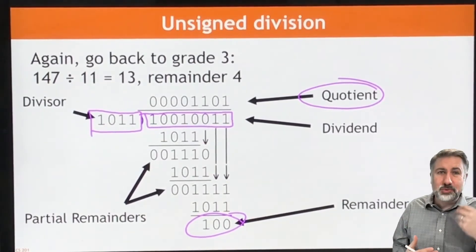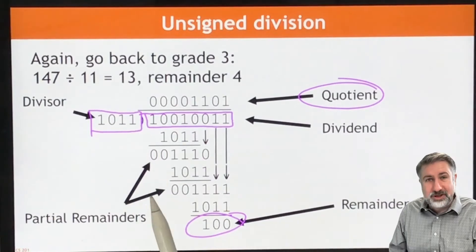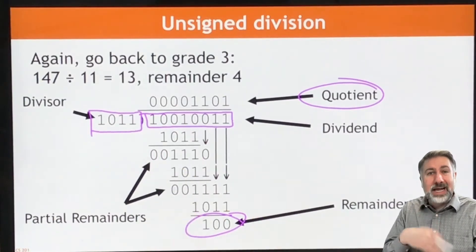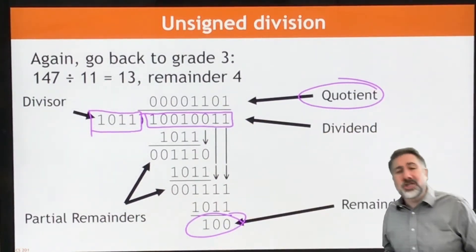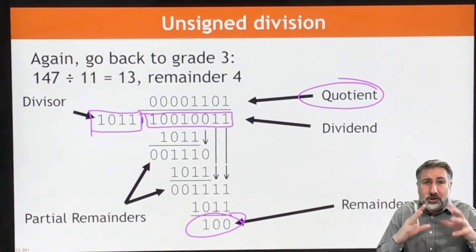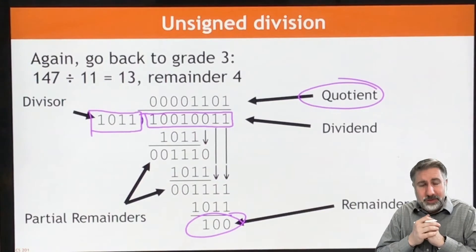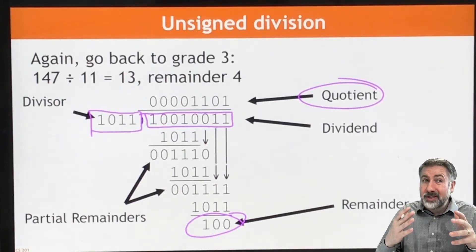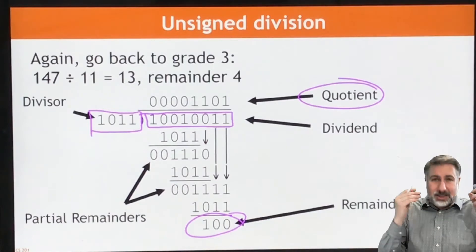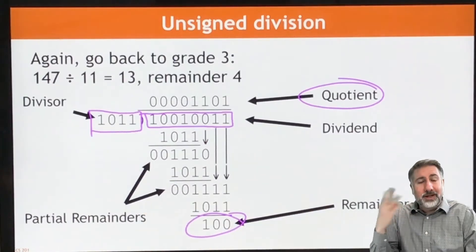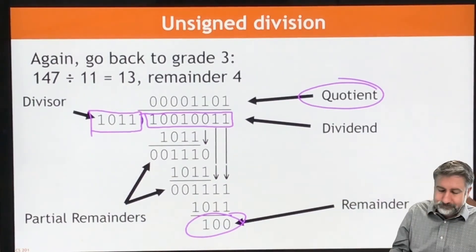Just like in multiplication we started with partial products, here in division we have partial remainders. We're going to start by subtracting the divisor from the dividend at a certain place and get a partial remainder, then subtract again, and another partial remainder and subtract again. Just like with subtraction when we built the hardware, we had to look at the possible cases and decide what the result would have been. Same thing with division — if the result would have been negative, we subtracted too much, so we just shift instead. We accomplish the subtraction, check the result, and if it's negative, we add the divisor back again because it was too small.